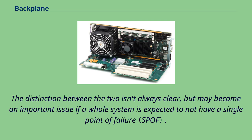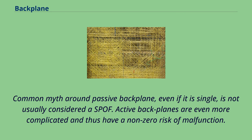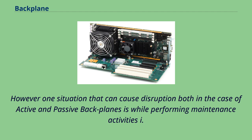The distinction between passive and active backplanes isn't always clear, but may become an important issue if a whole system is expected to not have a single point of failure. Active backplanes are even more complicated and thus have a non-zero risk of malfunction. However, one situation that can cause disruption both in active and passive backplanes is while performing maintenance activities.